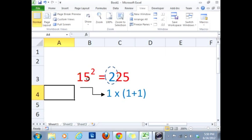For example, right now we have 15 here. So 15 square is 25 in the end, and then multiply 1 by 2. So that is 2. So we get 225.